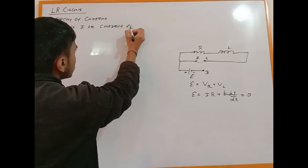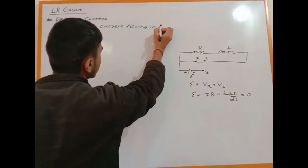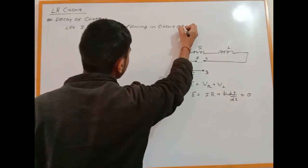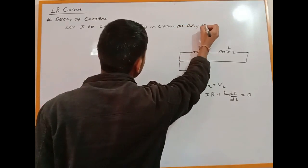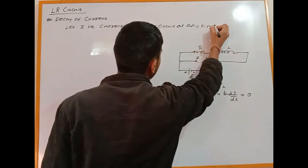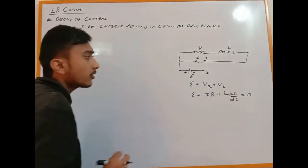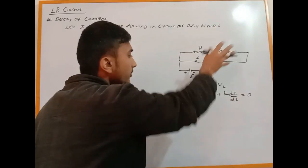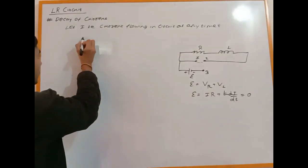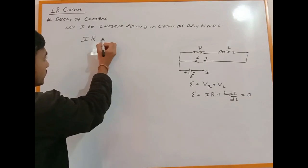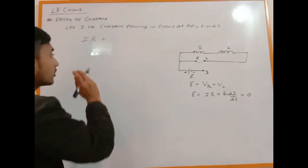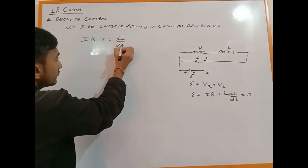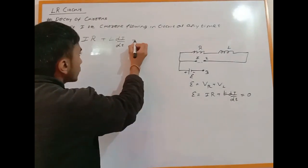At any instant T, current I flows through the circuit. The potential difference across R plus L(di/dt) equals zero since there's no EMF.